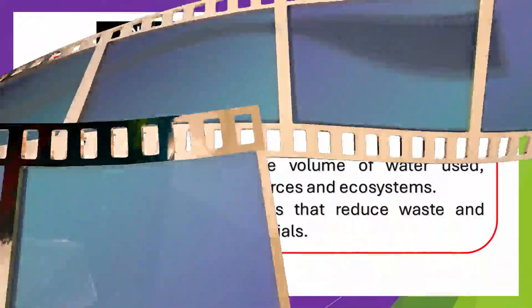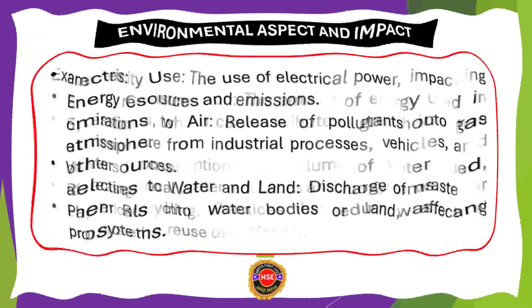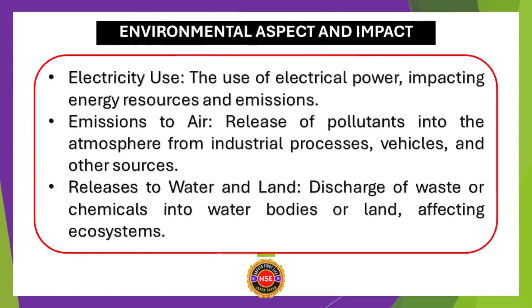Now let us understand environmental aspects with suitable examples. Number one: energy consumption — the amount of energy used in operations, which can contribute to greenhouse gas emissions. Number two: water consumption — the volume of water used, affecting local water resources and ecosystems. Number three: paper recycling — practices that reduce waste and promote the reuse of materials. Number four: the use of electricity — impacting energy resources and emissions.